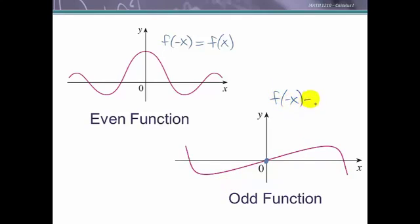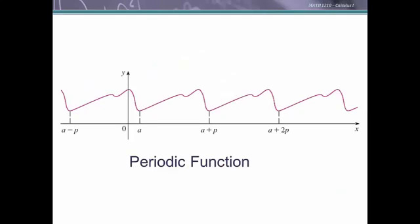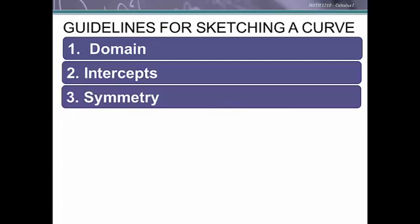An odd function is symmetric about the origin — if we put a push pin at the origin and rotate 180 degrees, one piece would land over the other. For every (x, y) on the graph, there's a corresponding (-x, -y). The test: put negative x in for x; if after simplifying it equals the negative of the function, it's odd. For our function y = x⁴ - 4x, putting in negative x gives x⁴ + 4x, so this function is neither even nor odd, and symmetry won't help us here.